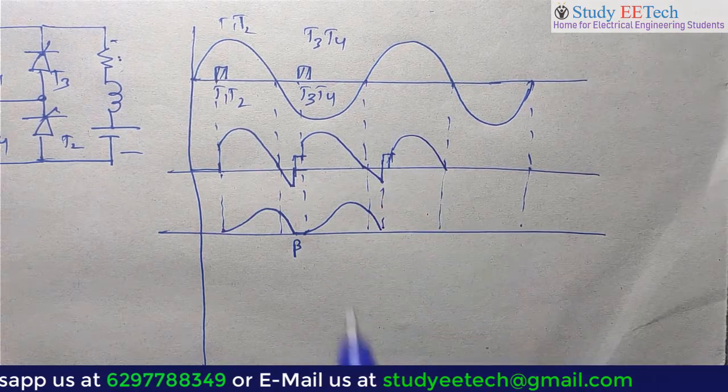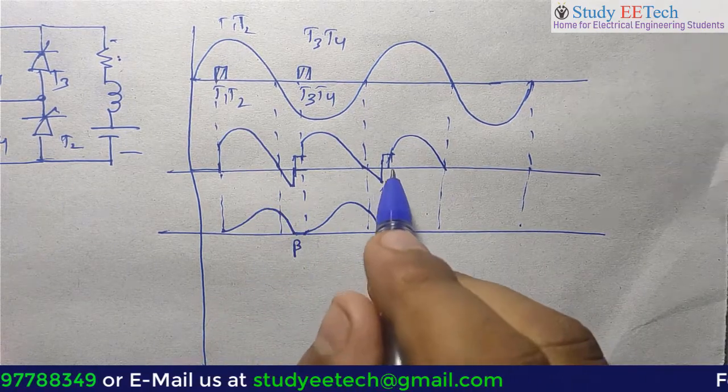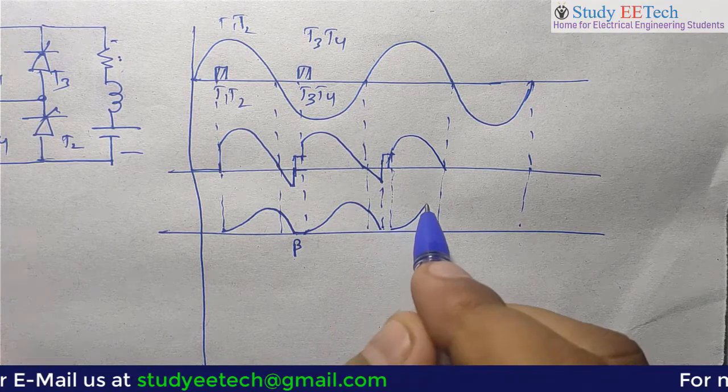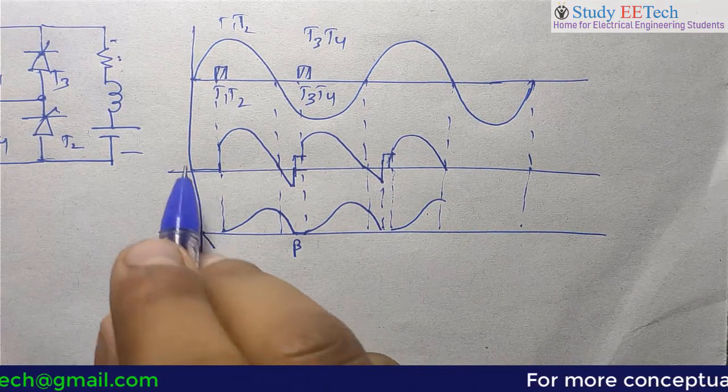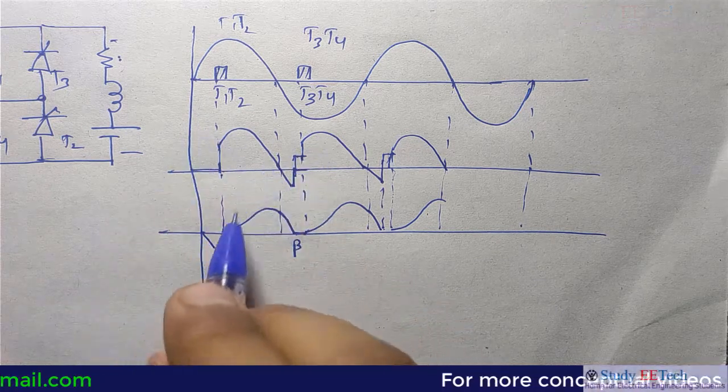And again the output voltage. And again we will get the current something like that. This will also happen here at this point if we consider the steady state.